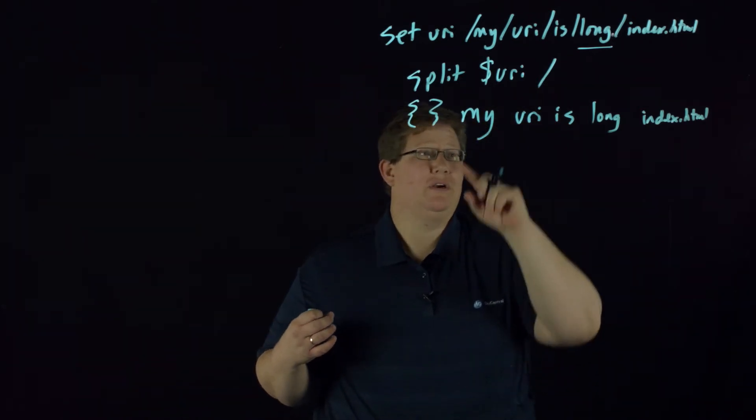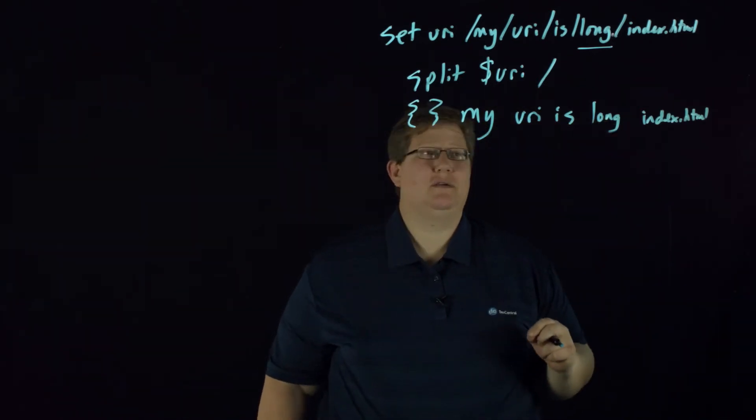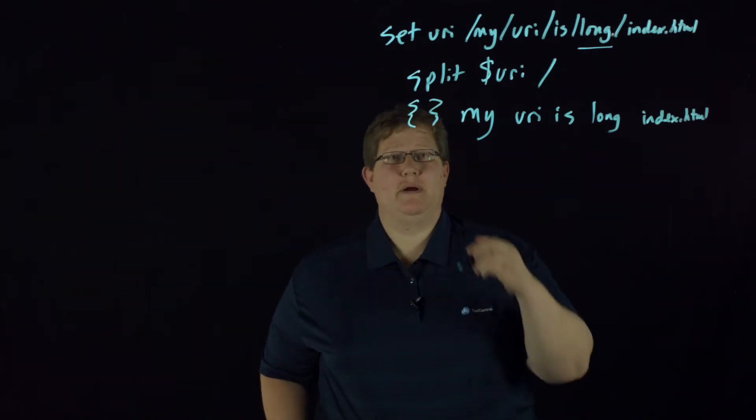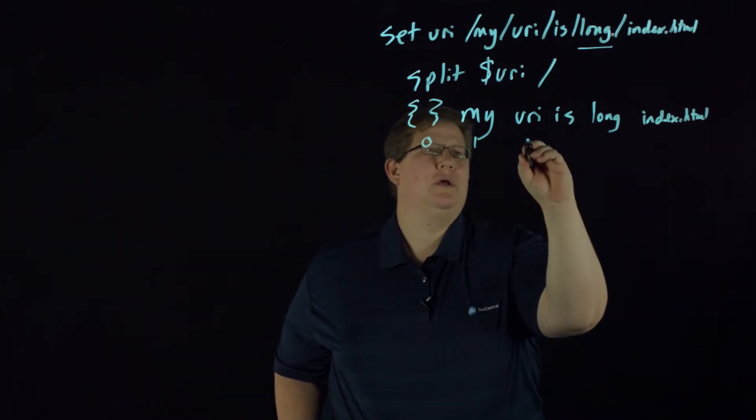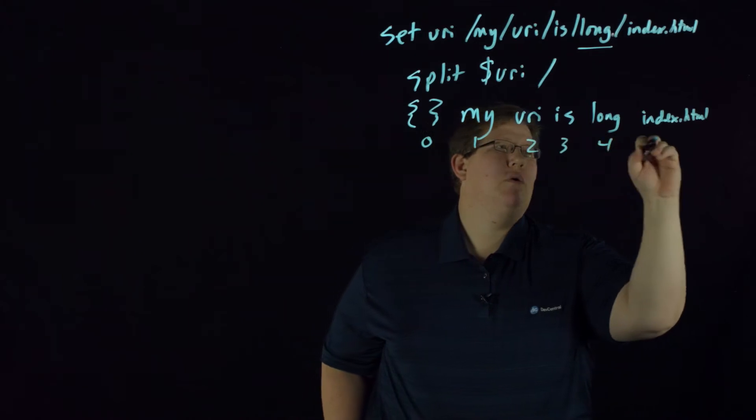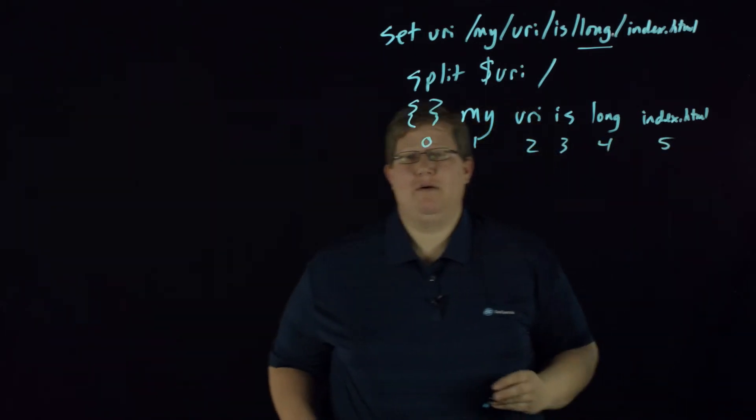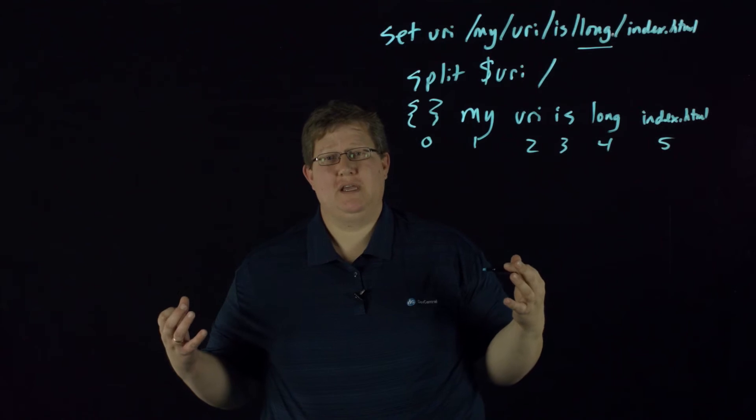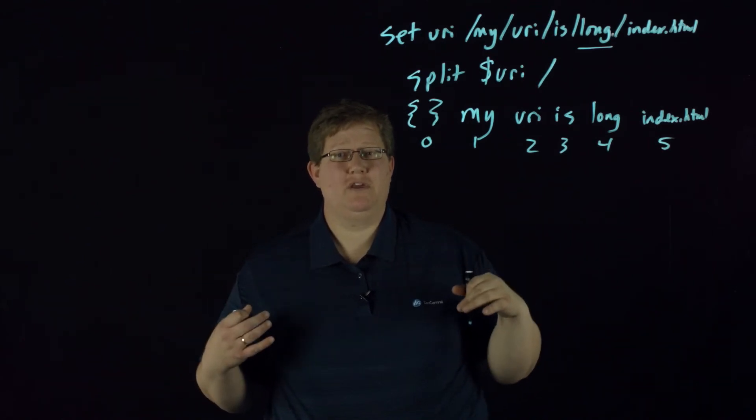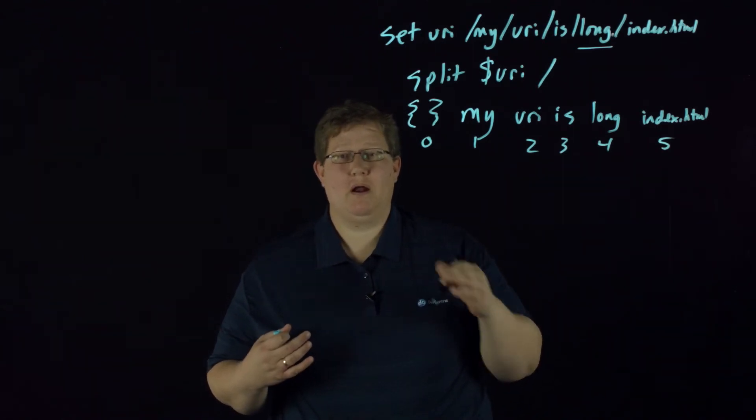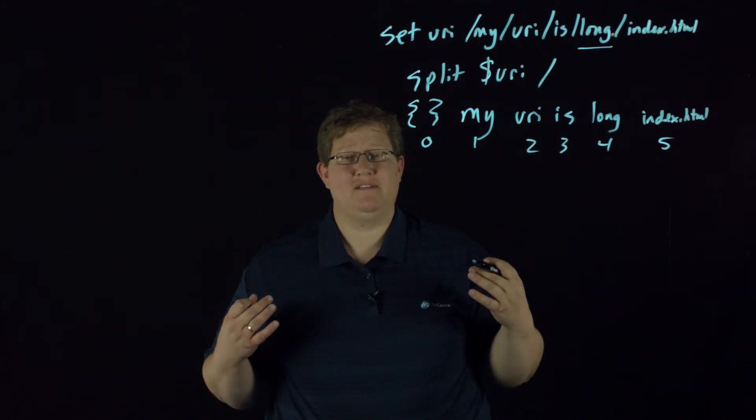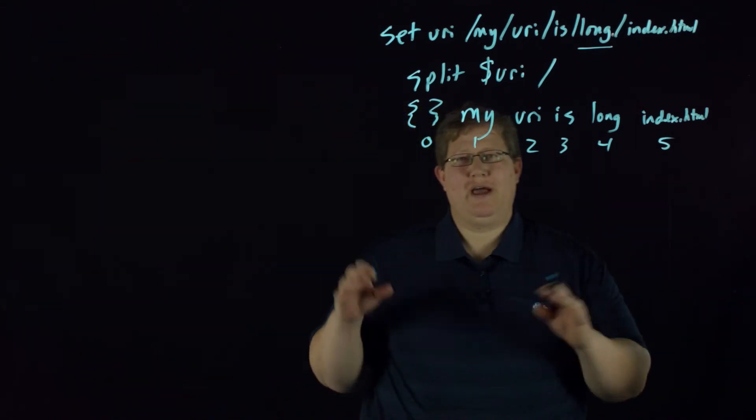lindex, in order to get that particular piece of data, starts at zero. So this is zero, one, two, three, four, and five. Now if you're using the getfield command, which essentially combines lindex and split, that starts at one.